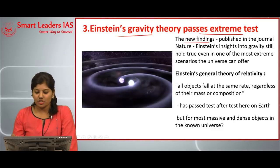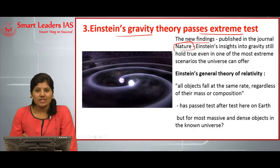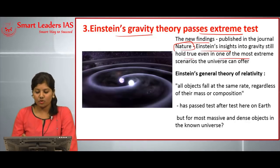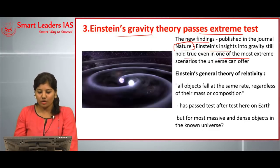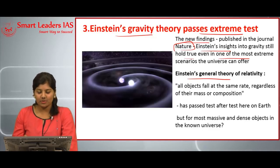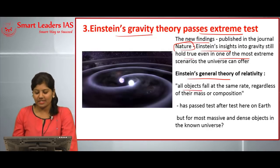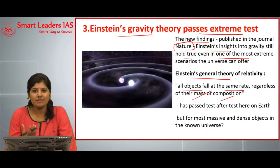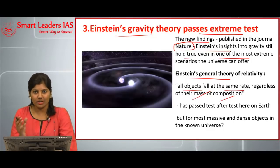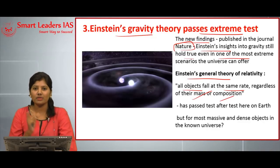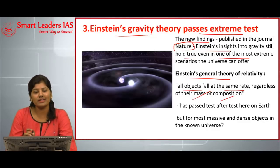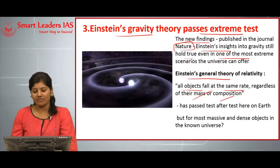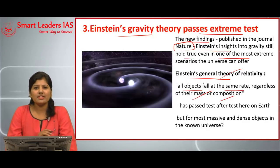The third topic is Einstein's gravity theory passing an extreme test. New findings published in the journal Nature suggest that Einstein's insight into gravity still holds true even in one of the most extreme scenarios the universe can offer. Einstein's General Theory of Relativity states that all objects fall at the same rate regardless of their mass or composition — for example, if you throw cotton or steel at the same time in space or in perfect laboratory conditions, they fall at the same time and at the same rate.